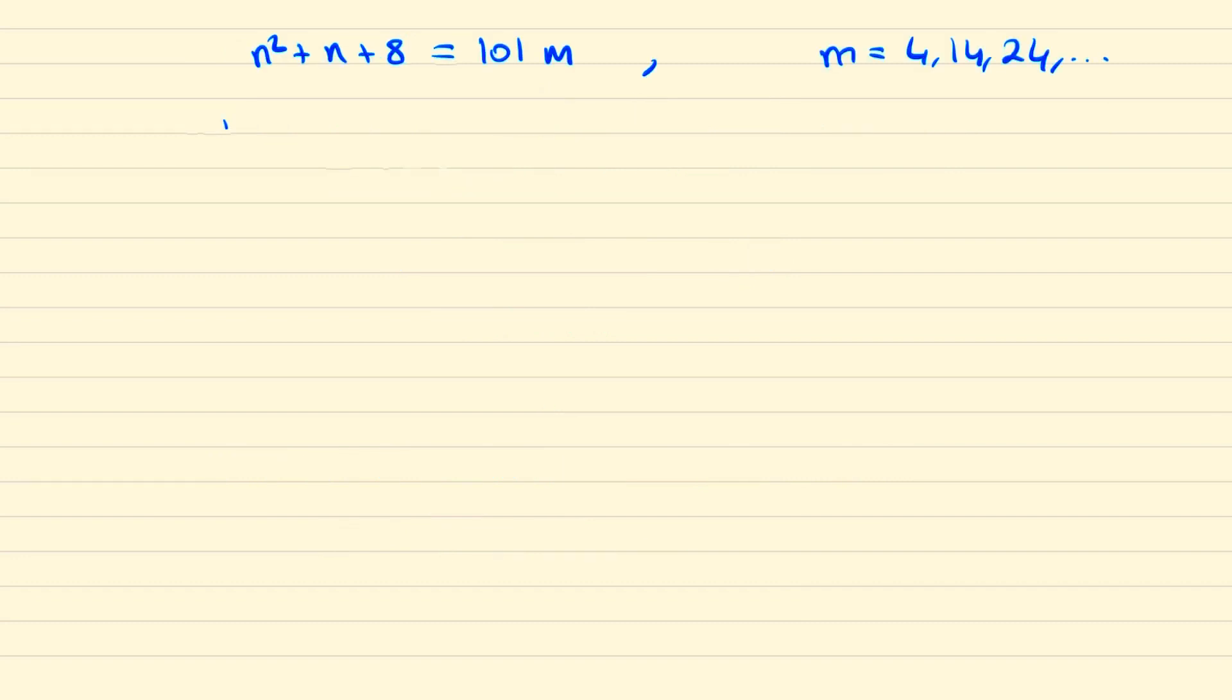And so looking at our first case when m equals 4 we have n squared plus n is equal to 396. Which would mean n times n plus 1 is 396. But this has no solutions.